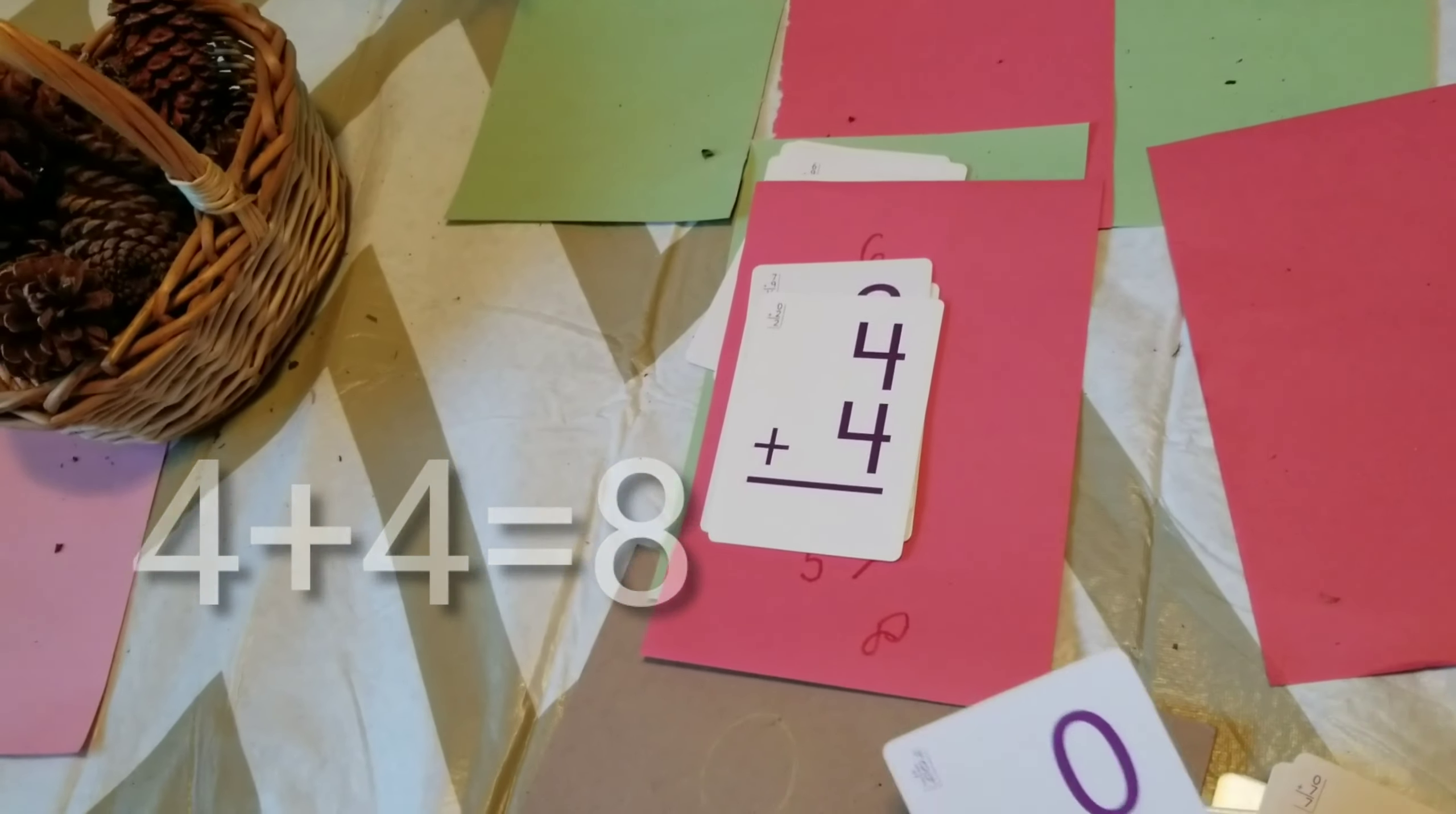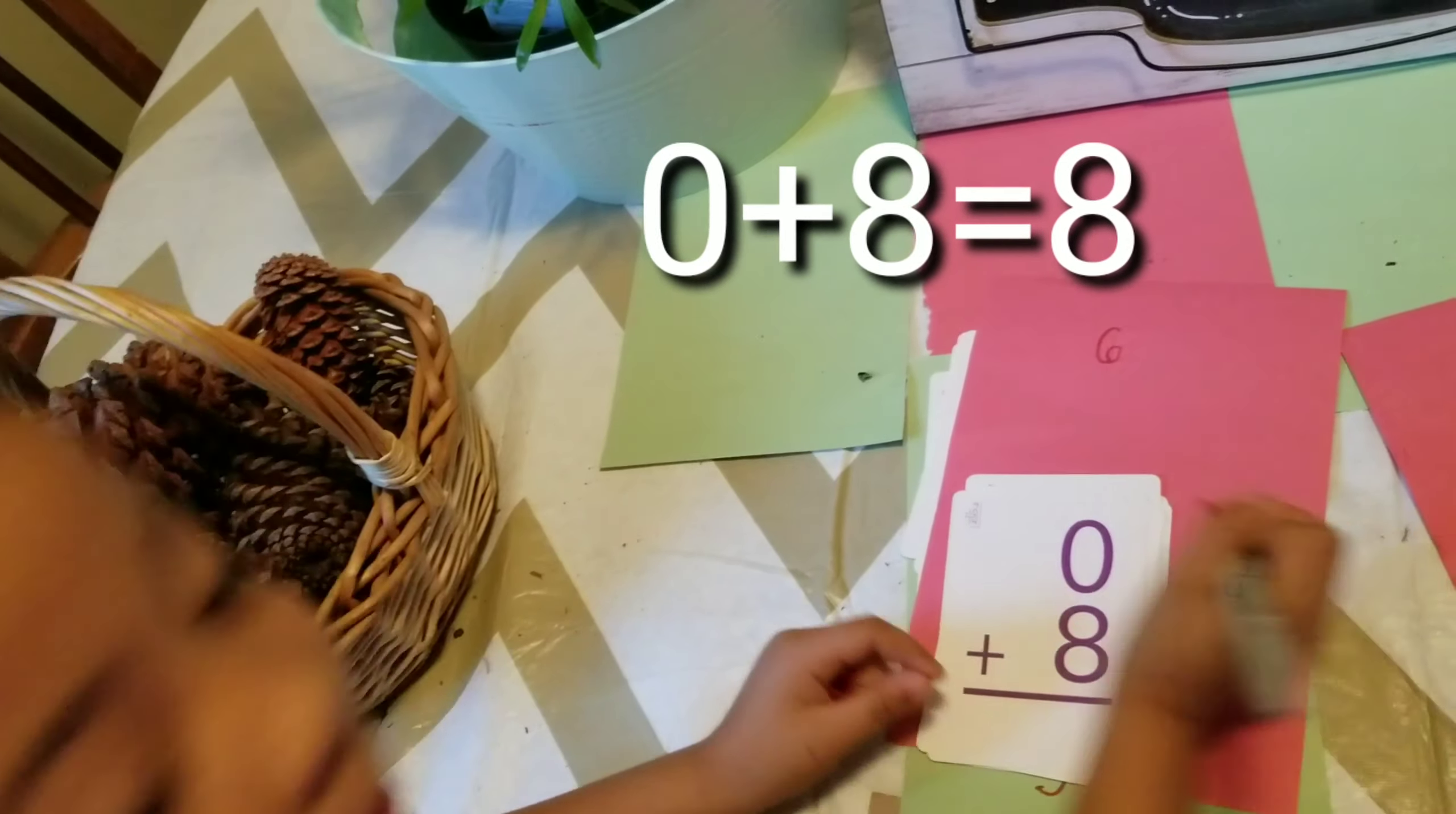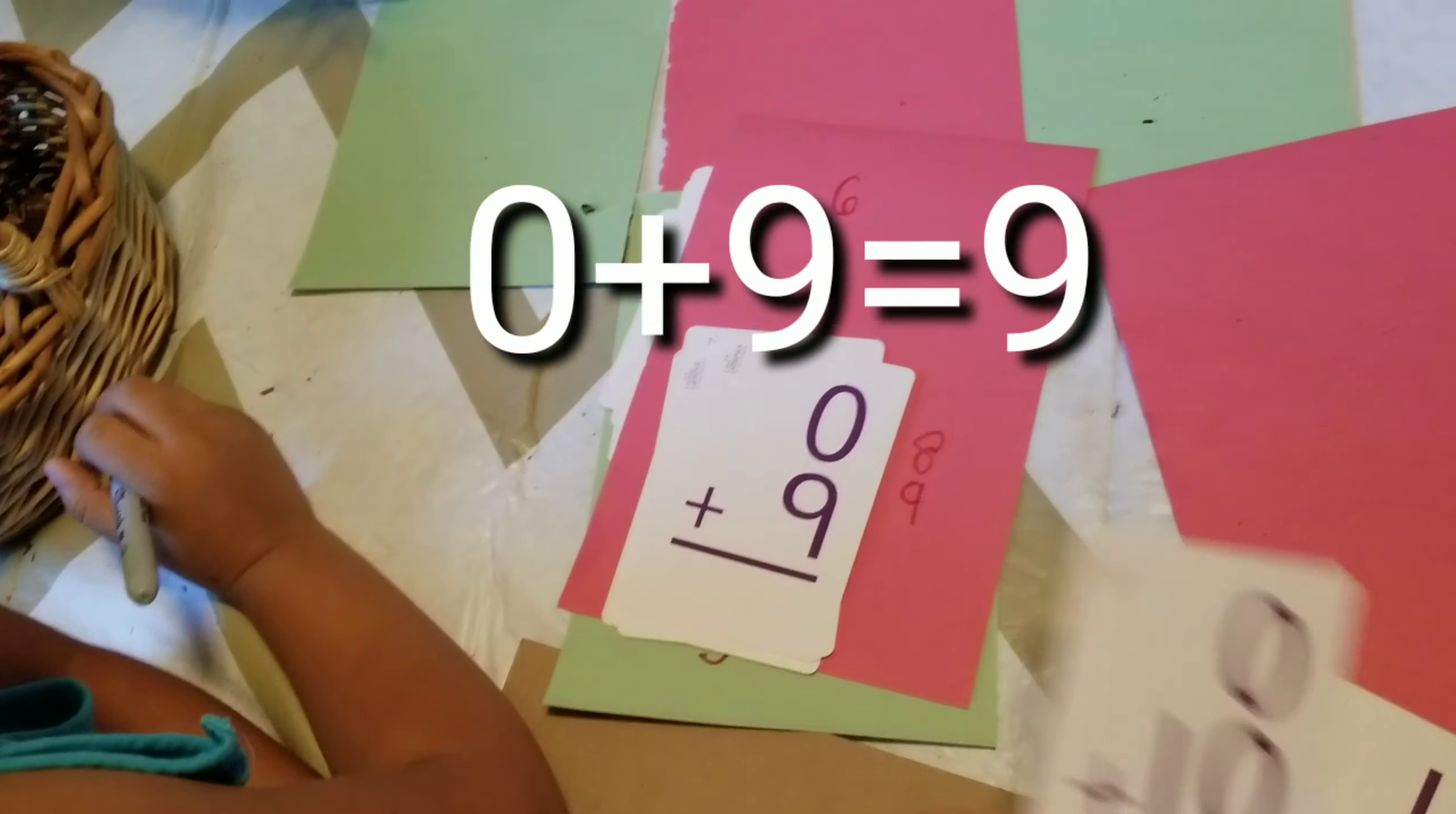How about zero plus eight? Ten, eight. Oh. That was easy too. Eight. Because if there's zeros there's no number on top. Nine. How about zero, like...